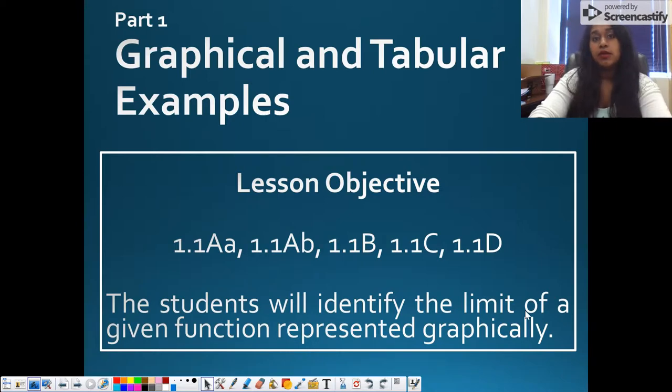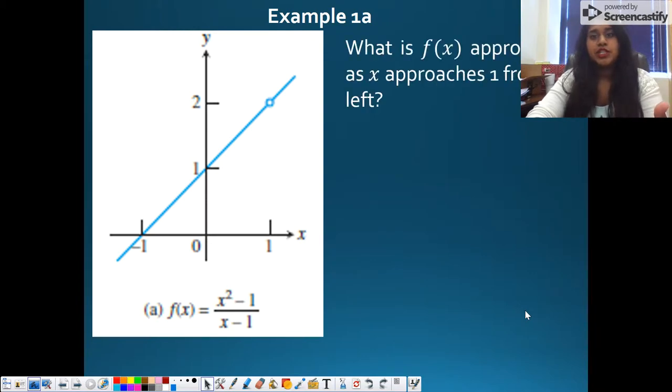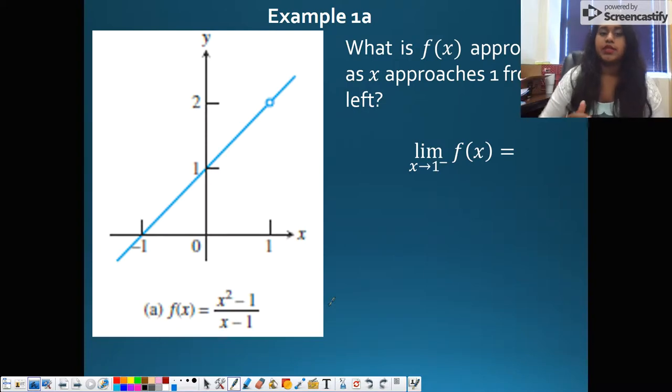So the first thing we're going to start with is our graphical and tabular approaches. On your page, you have these graphs, these three examples, 1A, 1B, and 1C. And so here is our graph. So the first question is, what is f(x) approaching as x approaches 1 from the left? And on your page, you have this kind of notation. And so in essence, that's all they're saying. What they mean is, sorry, let me get this over here. What they are saying is that, if you can see my cursor over here, this is what that means.